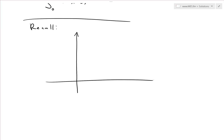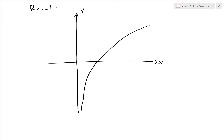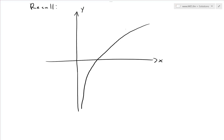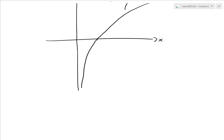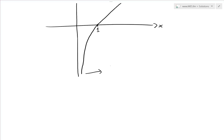If you were to graph it out — recall from my earlier videos — the ln function looks like a curve that goes down, approaching negative infinity as x approaches 0 from the right side. This is y equals ln(x). At x equals 1, the function equals 0. And basically the limit as x approaches 0 from the right side, denoted by the plus sign, ln(x) approaches negative infinity.